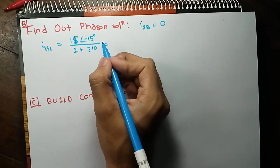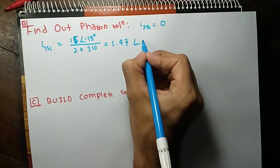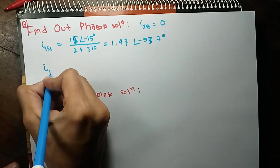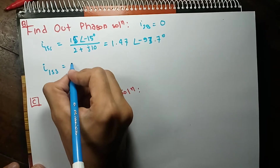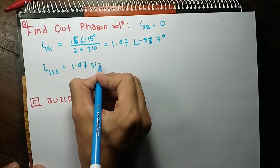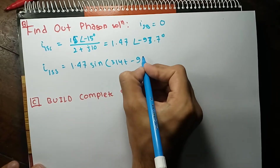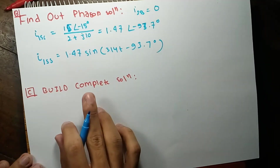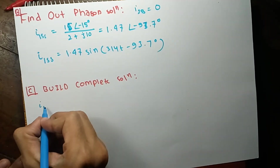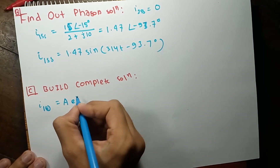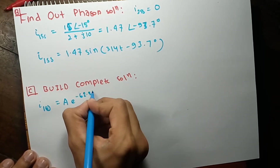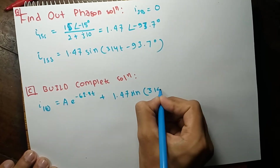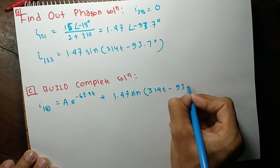That gives a value of 1.47 at an angle of −93.7°. So I1 steady state will be 1.47·sin(314t − 93.7°). The third step is to build the complete solution. I1(t) will be A·e^(−62.8t) + 1.47·sin(314t − 93.7°).